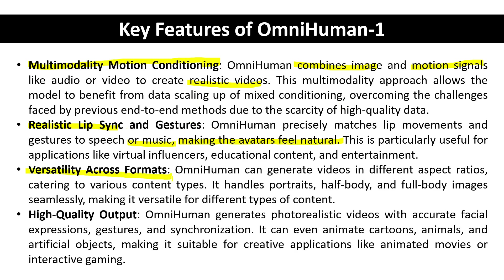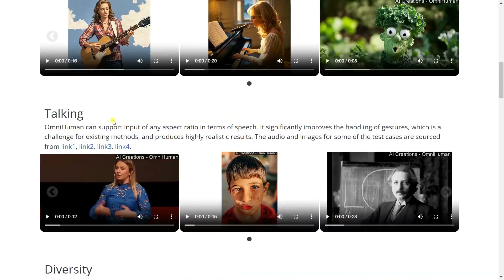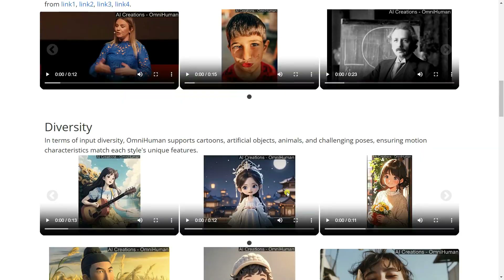The third key feature is versatility across formats — generating videos in different aspect ratios for Instagram, TikTok, Facebook, and other social media. The fourth is high-quality output, with output up to 4K quality. OmniHuman generates photorealistic video with accurate facial expressions, gestures, and synchronization. It can even animate cartoons with realistic lip-syncing.